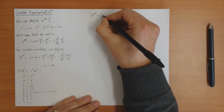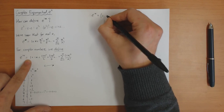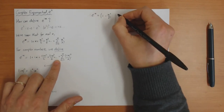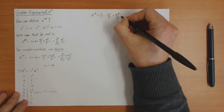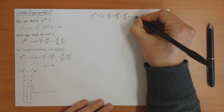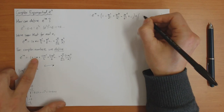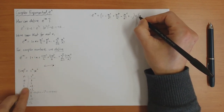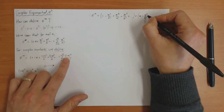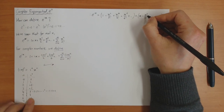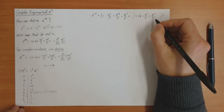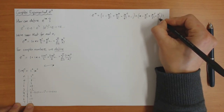Separating into real and imaginary parts: the real part is 1, then minus x squared over 2 factorial, then plus x to the 4 over 4 factorial, then minus x to the 6 over 6 factorial, and so on. The imaginary part starts with x, then i cubed gives minus i so we get minus x cubed over 3 factorial, then i to the 5 is i so plus x to the 5 over 5 factorial, then i to the 7 is minus i so minus x to the 7 over 7 factorial, and so on.